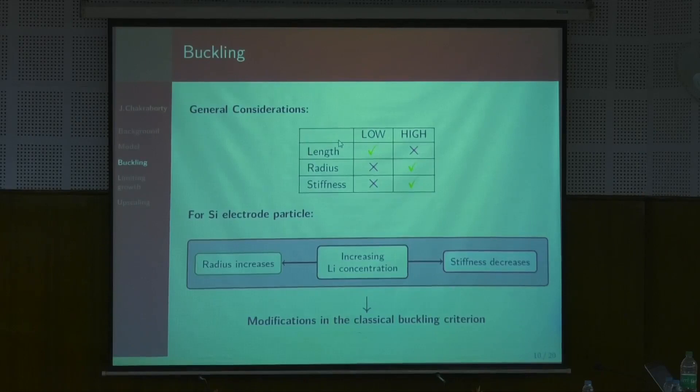To explain buckling simply: suppose my pen is a cylindrical particle. If it does not have a very large radius and is quite long, I expect it will buckle easily if I push down at its ends. The shorter and fatter it is, the safer it is against buckling. The longer and thinner it is, the more prone to buckling — very intuitive.